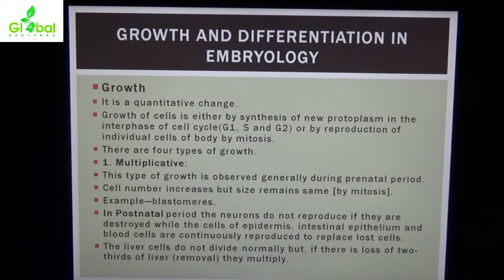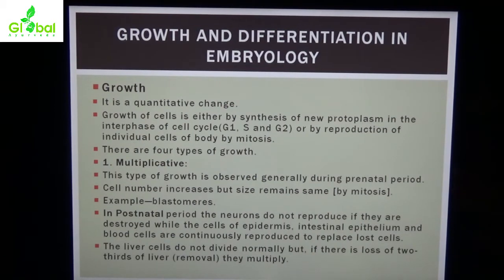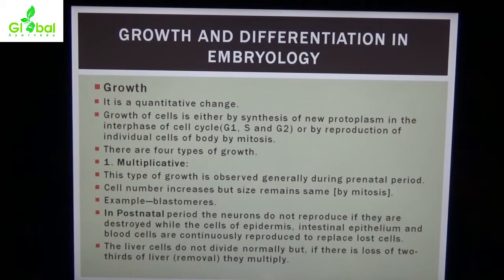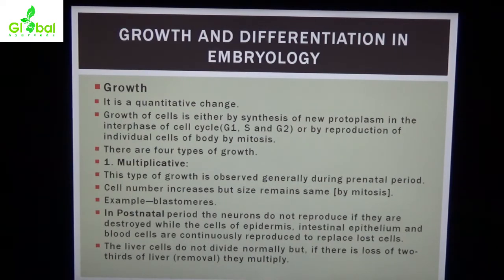There are four types of growth. The first is multiplicative. This type of growth is observed generally during the prenatal period — before birth, intrauterine life of the fetus. Cell number increases but size remains the same. For example, blastomere.